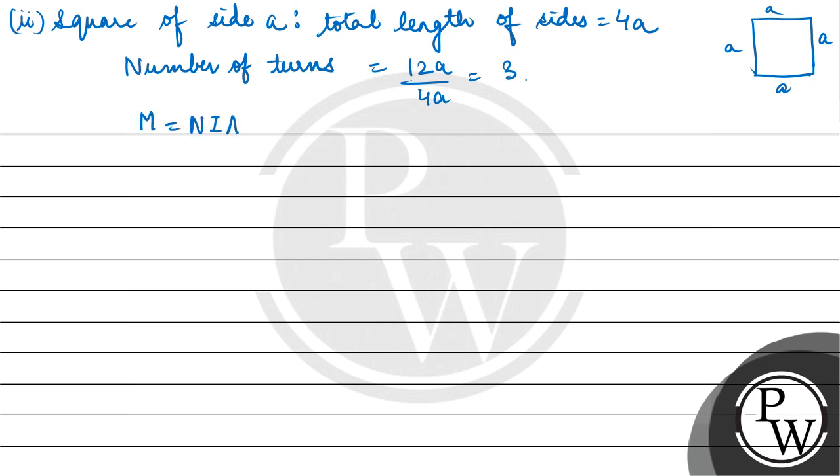Magnetic dipole moment which is equal to NIA. Number of turns 3, current I into area of square a square. So 3I a square. Next we have